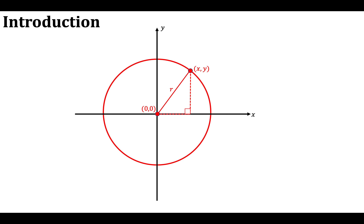However, if we just had any point (x, y) — so we're generalising now. We had a specific case previously and now we are generalising for any point on the circumference. If we go through the same process, the horizontal length in our right angle triangle is x and the vertical length is y, and our hypotenuse is still the radius. Setting up the equation as before, the hypotenuse squared equals the sum of the squares of the two shorter sides, so R squared equals x squared plus y squared.